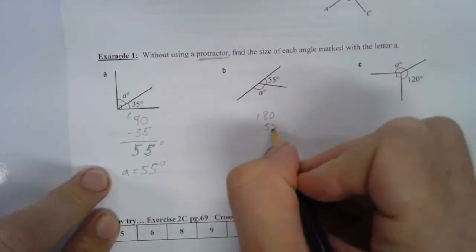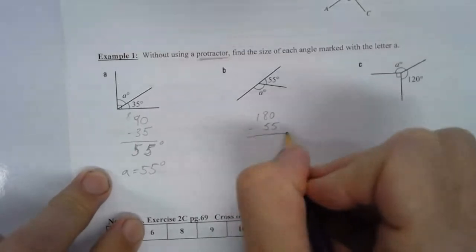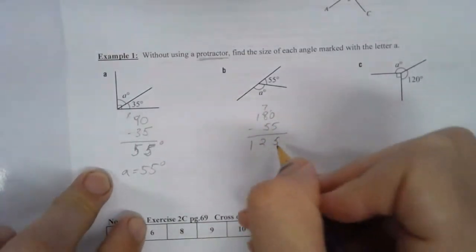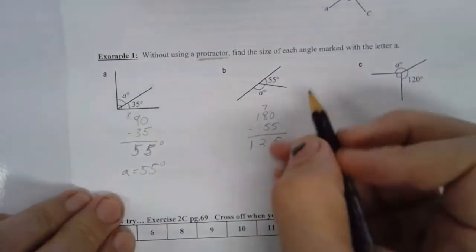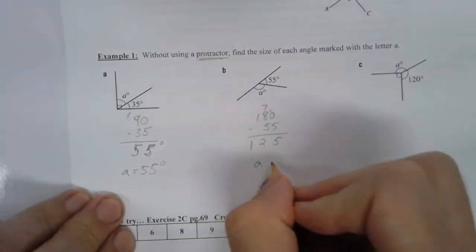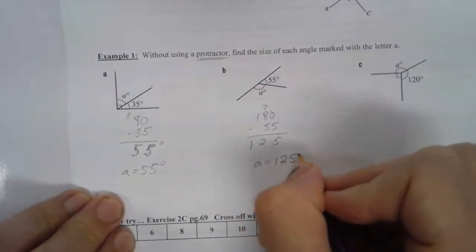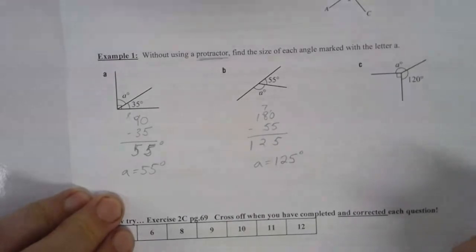We know the total is 180. We know that this angle is 55. So if I take that off 180, I end up with 125. And so the truth of the matter is A equals 125 degrees. And let's put degrees on there so we know that we're talking about degrees and not chickens.